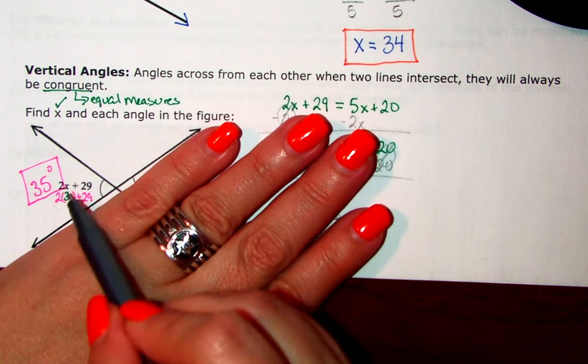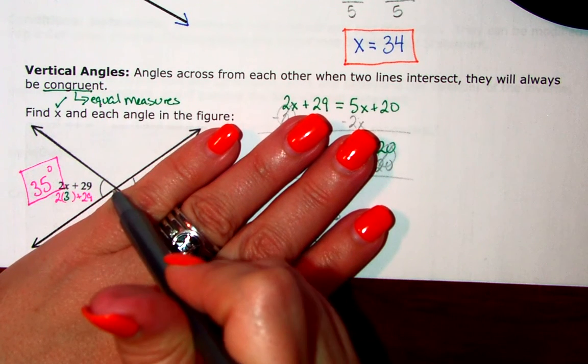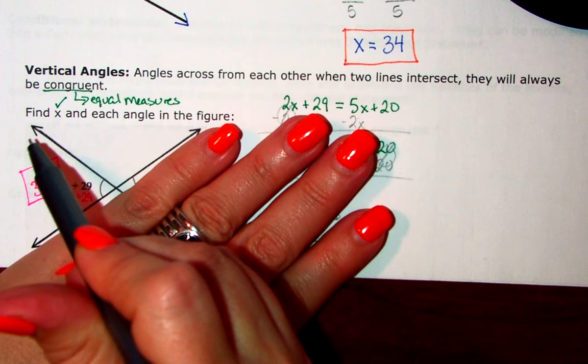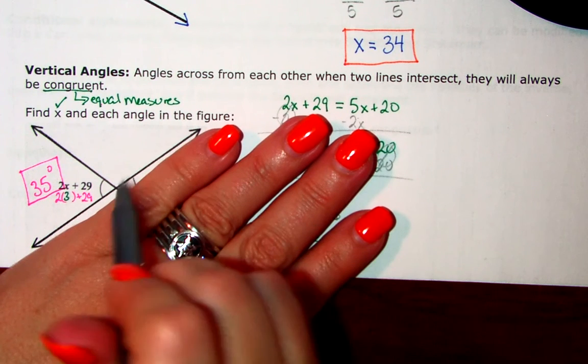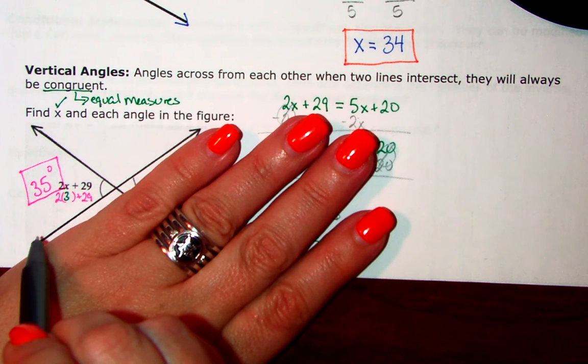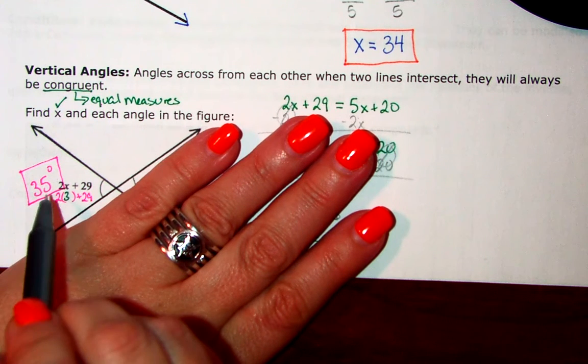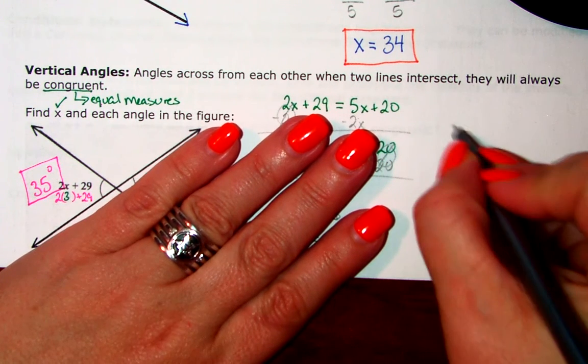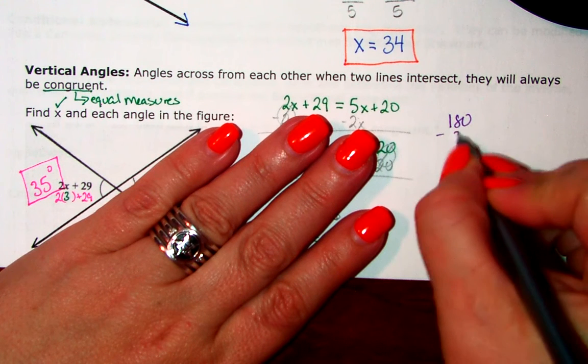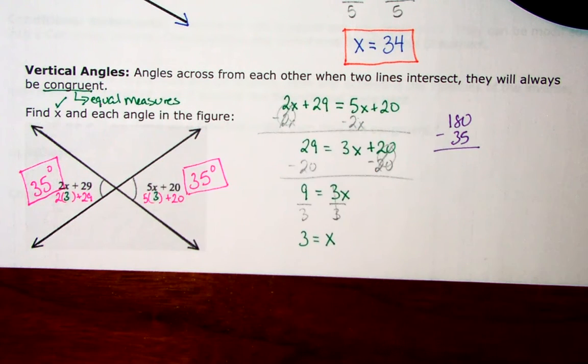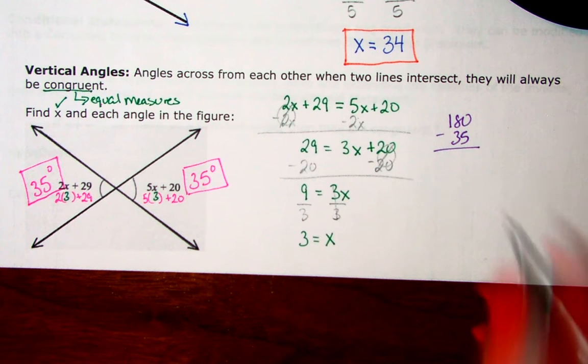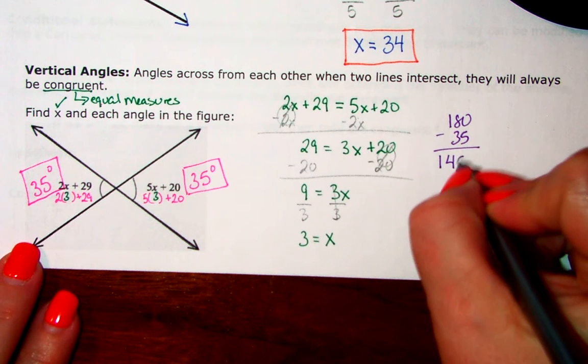Now, these two angles share a vertex, they share a side, and along the bottom, their non-shared sides make a line. So, they are a linear pair, which means they do add up to 180. So, if I use 35 on this side, I'm going to do 180 minus 35 to see what's left for that other angle. 180 minus 35 is 145 degrees.